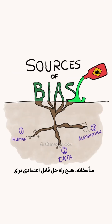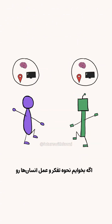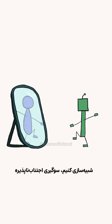Unfortunately, there is no reliable solution to eliminate bias from AI. After all, bias is part of being human. And if we're trying to replicate the way humans think and act, bias is inevitable. AI is only a mirror image of us after all.